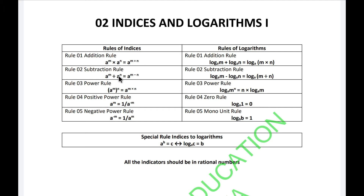Always confirm that the same base is available. Rule three is the power rule: if you have a to the power m, and that result is raised to the power n — a power of a power — you can write it as a to the power m times n.